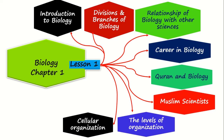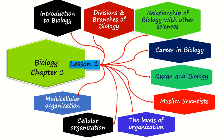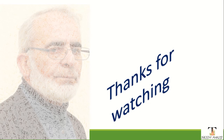Then cellular organization — at the population level individuals come together. Then multicellular organization: one animal example and one plant example. For multicellular organization we discuss the frog as an animal example. Thank you for watching.